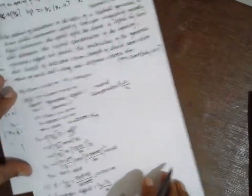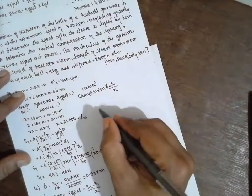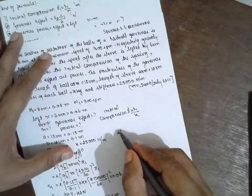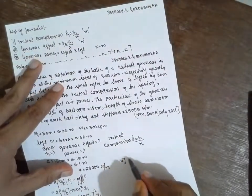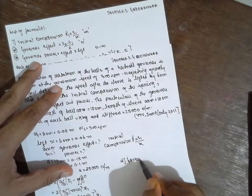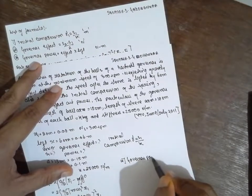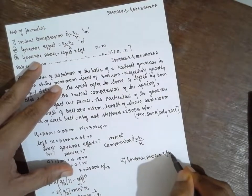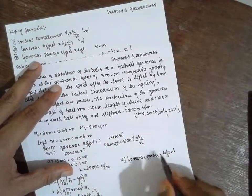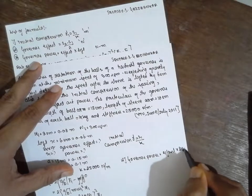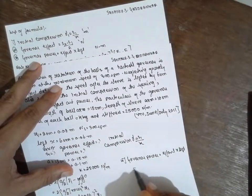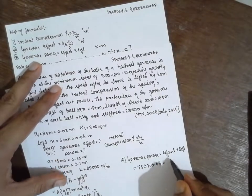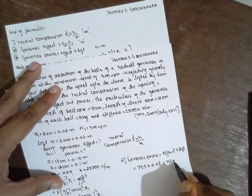Next is governor power. Governor power equals governor effort multiplied by lift x, which is 750 × 0.06, giving an answer of 45 Newton-meter.